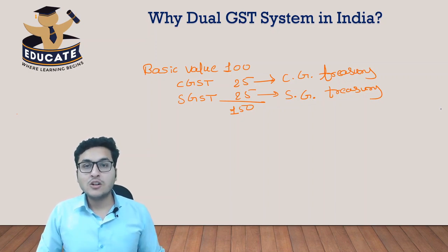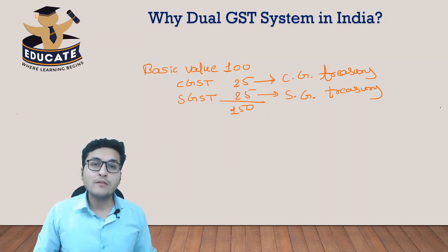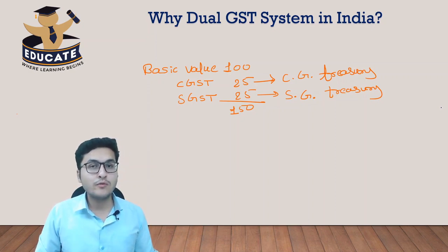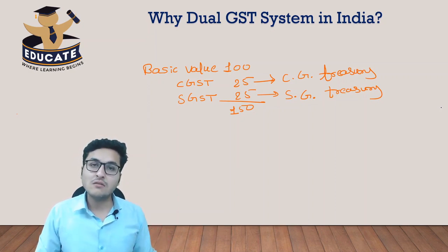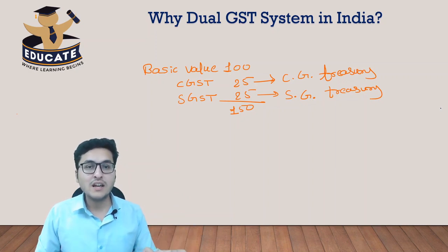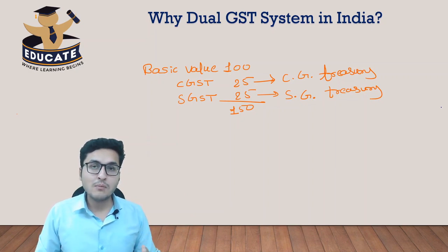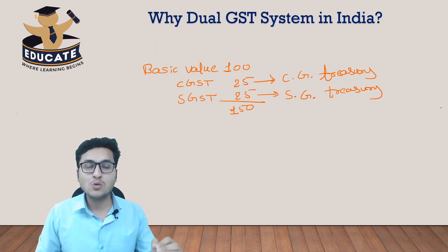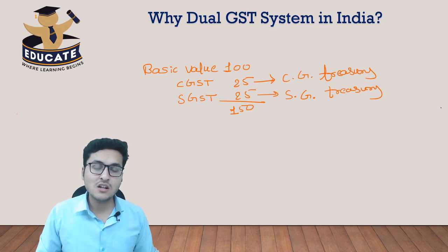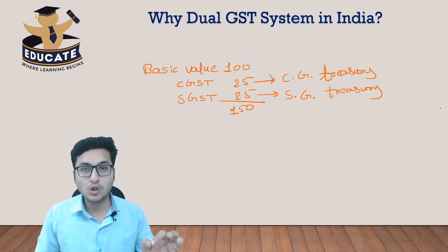The state government cannot every time ask the central government for its revenue — it must have its own source of revenue to fulfill its responsibilities. So in case of intrastate transactions, CGST goes to the treasury of the central government and SGST goes to the treasury of the state government. For example, if a supplier in Gujarat sells goods to a consumer in Gujarat, CGST goes to the central government and SGST goes to the Gujarat government.